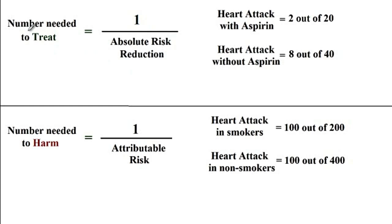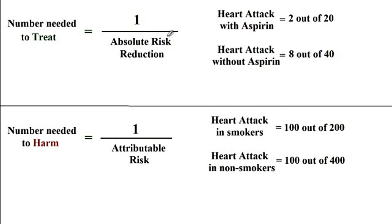Number needed to treat is the number of patients that need to be treated with a favorable treatment — like aspirin — for one person to benefit. For instance, how many people do you need to treat with aspirin for one less person to have a heart attack? Number needed to harm is the number of patients that need to be exposed to a risk factor — like smoking — for one additional person to be harmed.